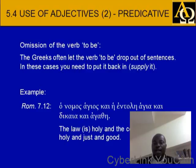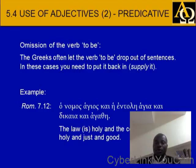Ho nomos hagios kai he entole hagia kai dikaia kai agathe — the law is holy, and the commandment is holy, and just, and good. That's Romans 7:12. So the verb to be is not there, but we supply it.